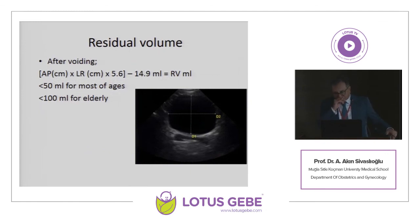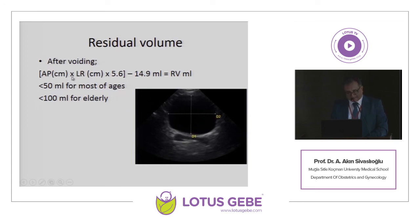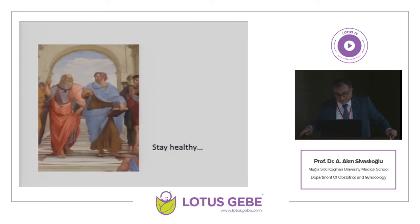Another important skill is measuring residual volume during pelvic floor ultrasonography. After voiding, measure the anteroposterior and left-right dimensions in one plane in centimeters, multiply them together, then multiply by 5.6, and subtract 14.9. The result is the residual volume in milliliters. For most patients under 50, residual volume should be below 100 milliliters; for elderly patients the threshold is slightly higher.